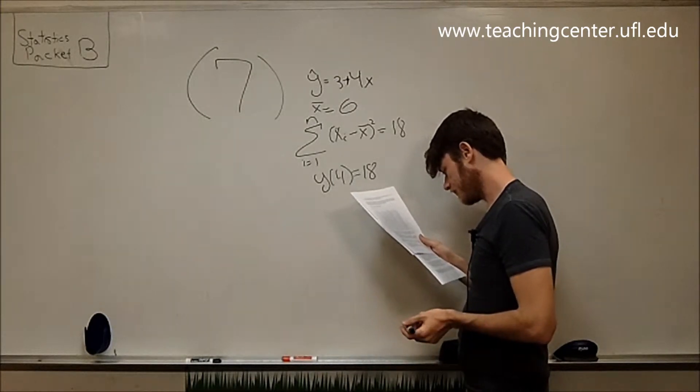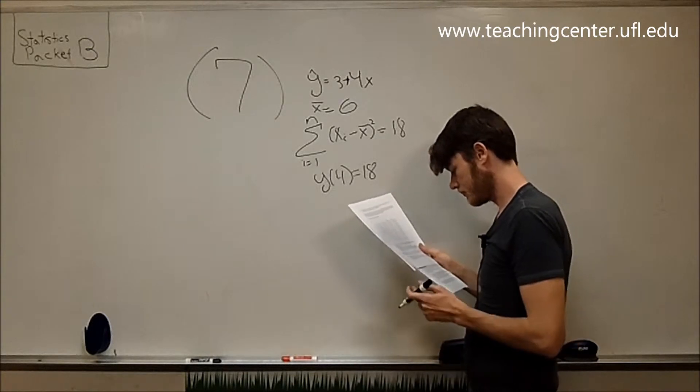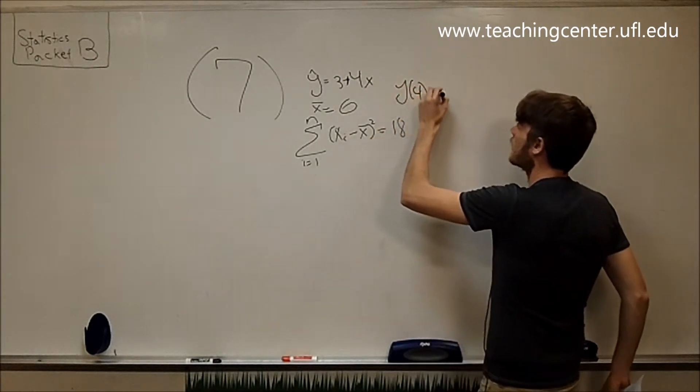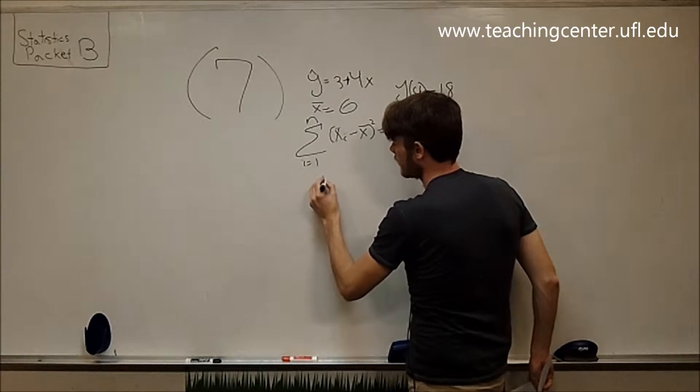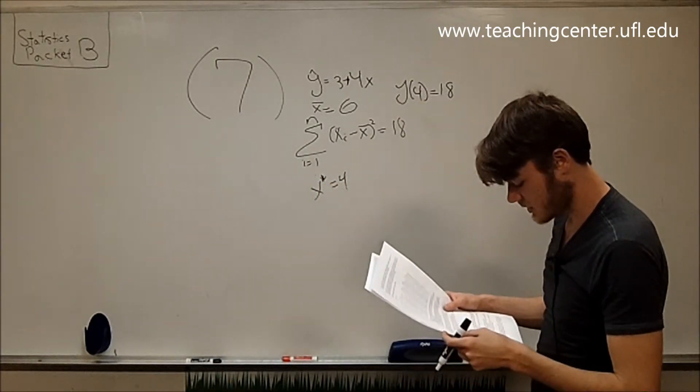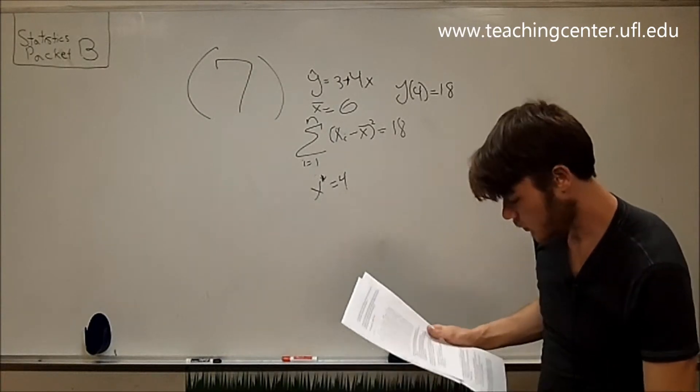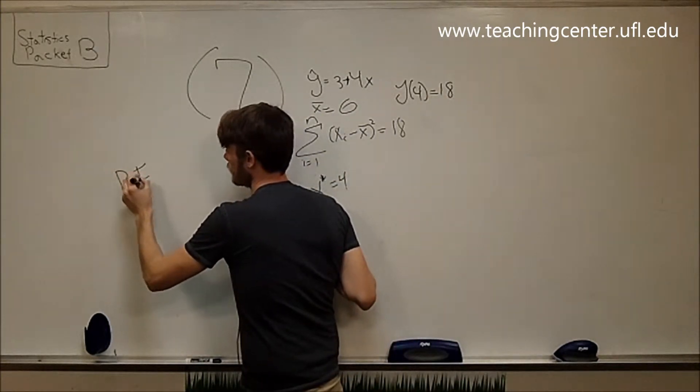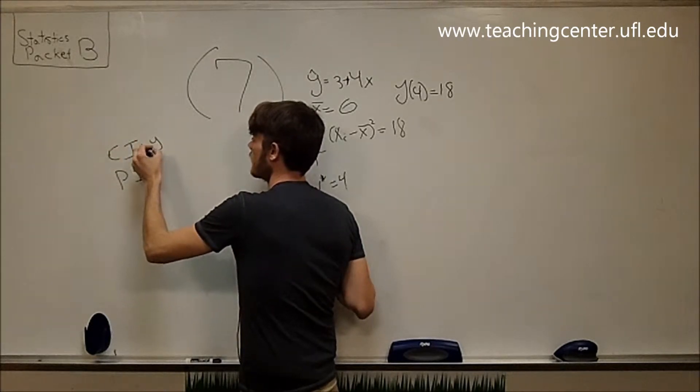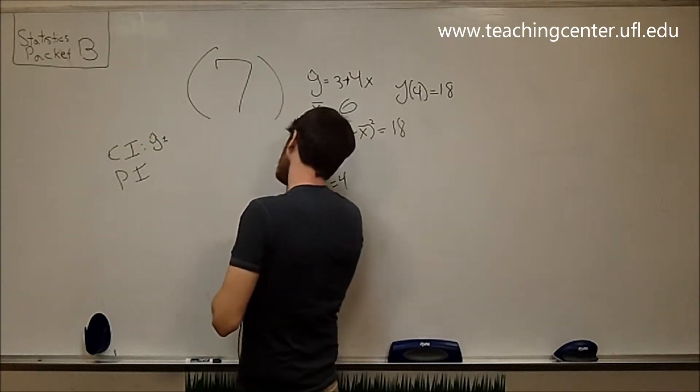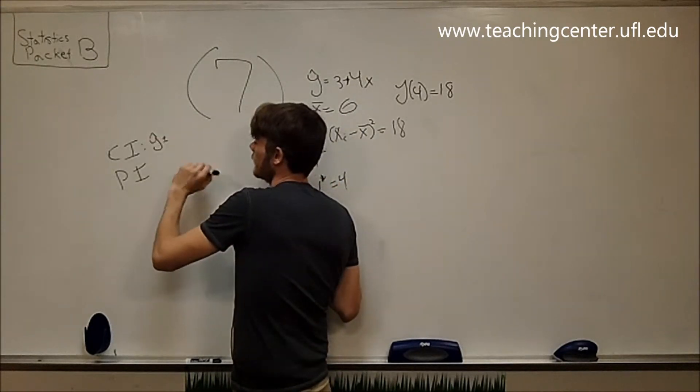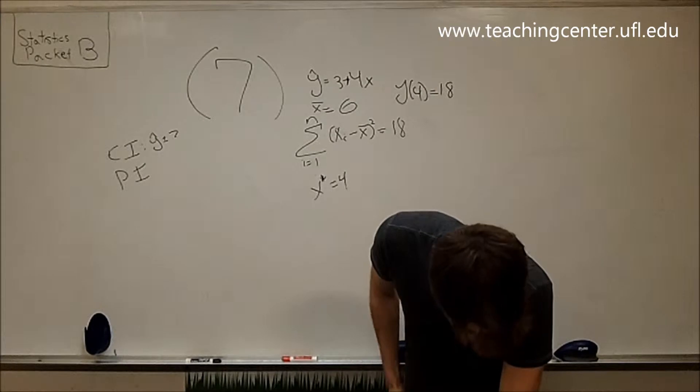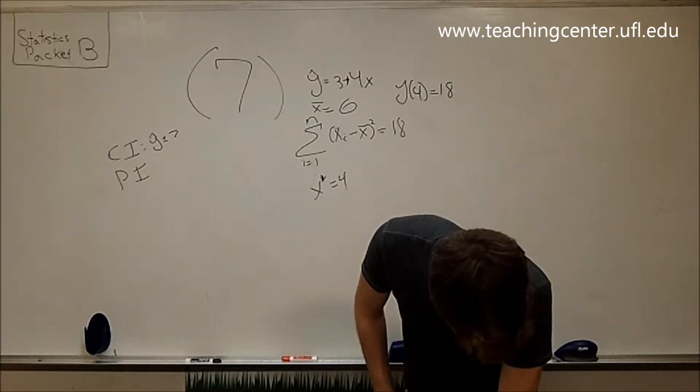And we want to create a confidence interval and a prediction interval for x star equals 4, right? Now the first question asks, which interval would be wider? Let me remind you of the equations. How many people are in our study? Let's see, 15 people.